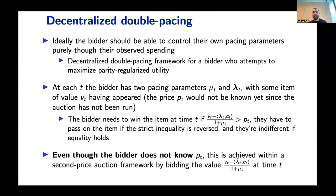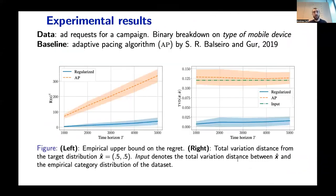If the bidder does that, we can show that we can recover the regret that I was discussing before, even if the bidder does not know pt before placing the bid. Now here we have some experimental results. These two particular plots are for a breakdown, a binary breakdown that we built depending on the type of mobile device originating the ad request. As a baseline, we use the adaptive pacing framework by Balsero and Gur.